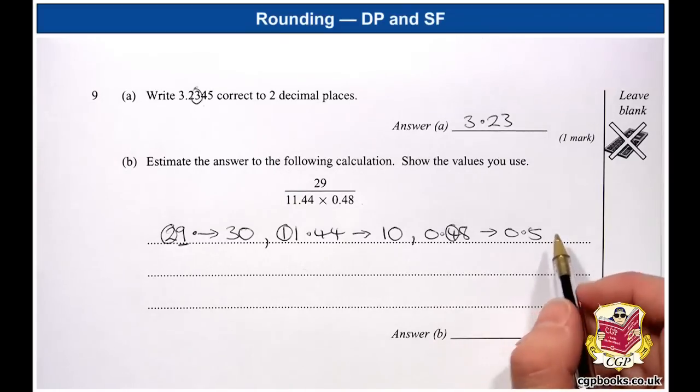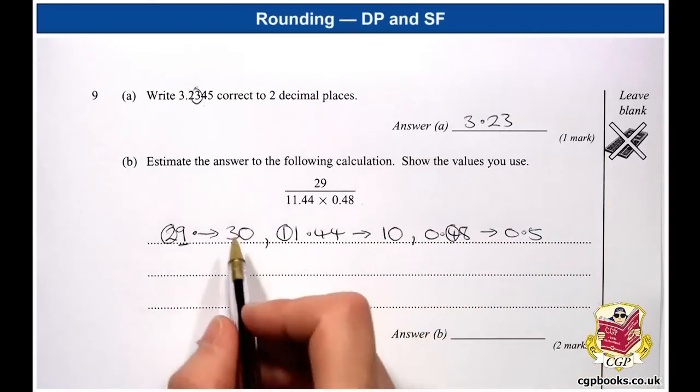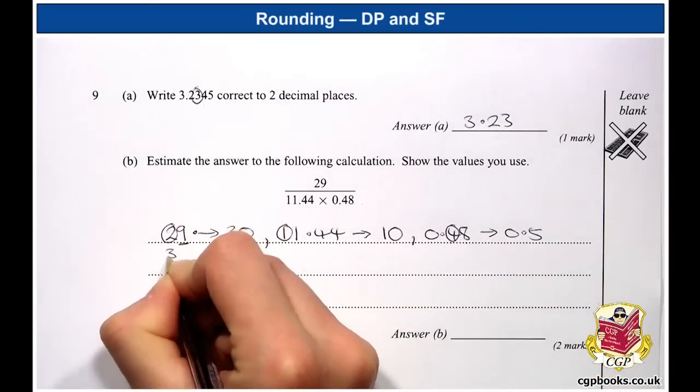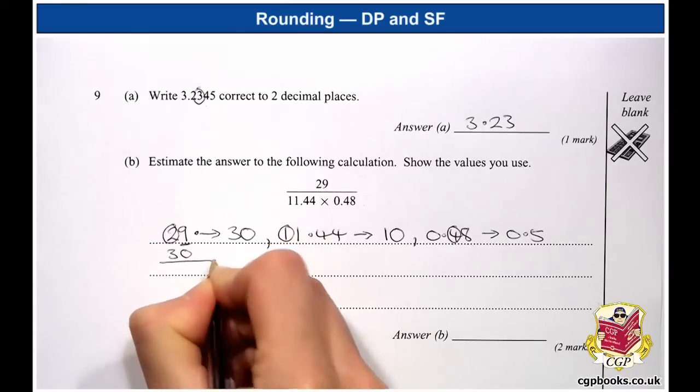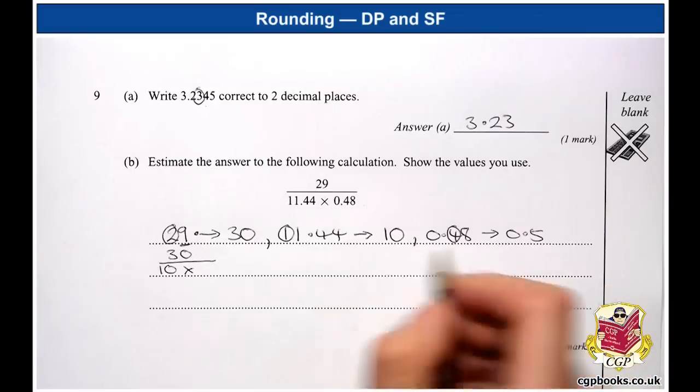OK, so now I just need to put these numbers into this calculation. So the top line becomes 30. And the bottom line is 10 times 0.5.